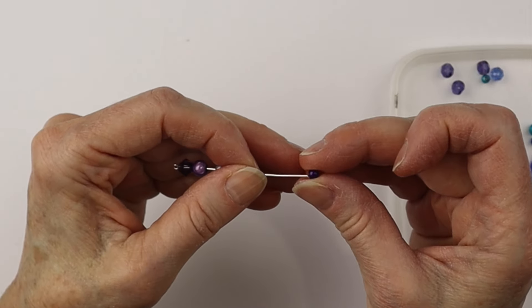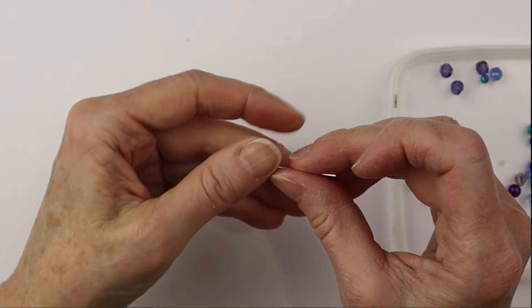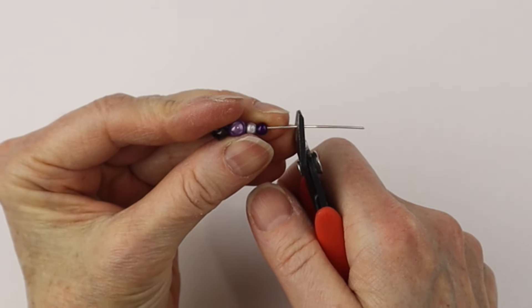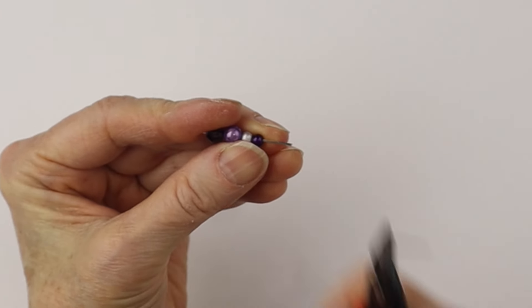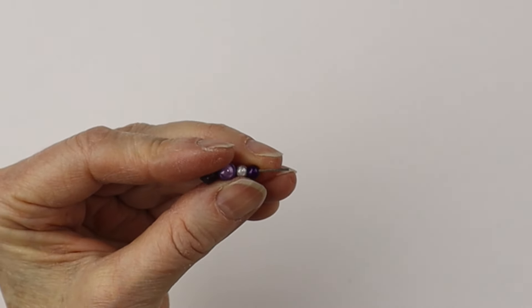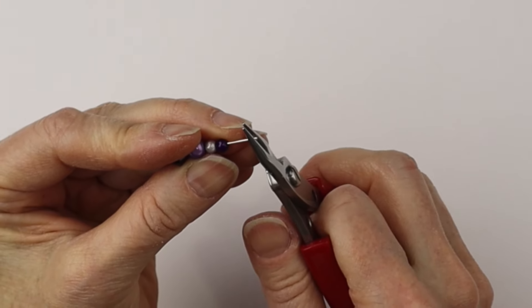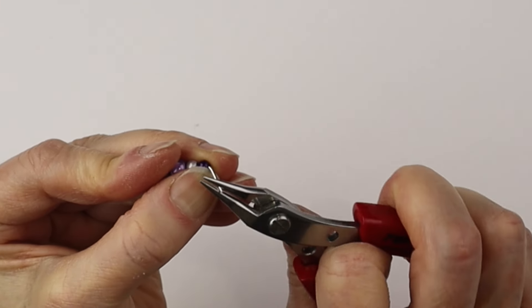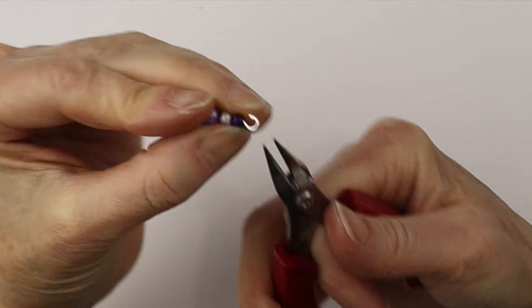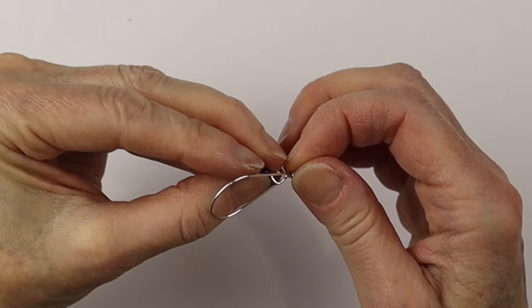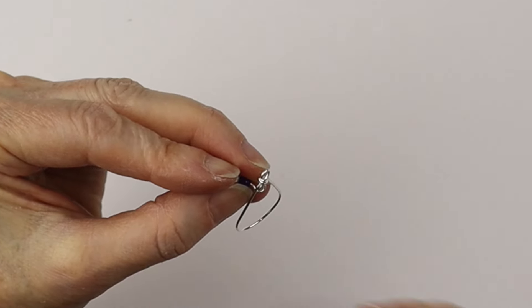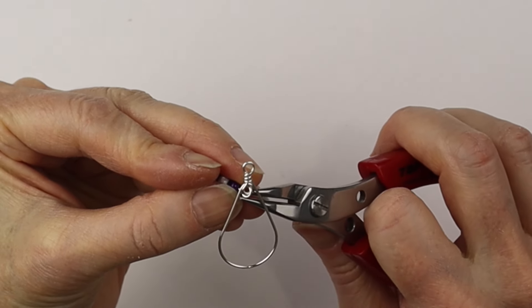Anywhere between 4 and 6 millimeter is a good size for these earrings. Then you're going to cut it at about three eighths of an inch to form a loop at the top. Hold it with the round pliers, bend it at an angle and around to make a nice centered loop. Now we're going to slide it onto the loop on the teardrop.